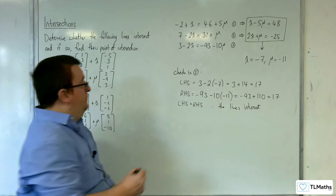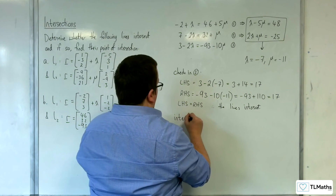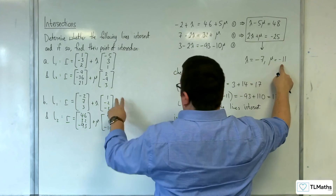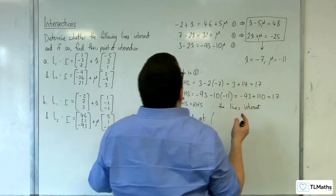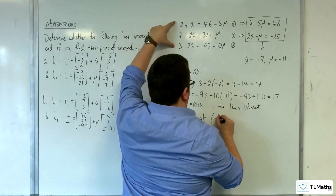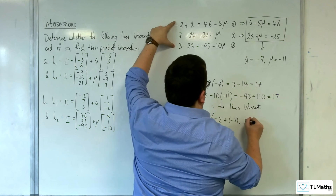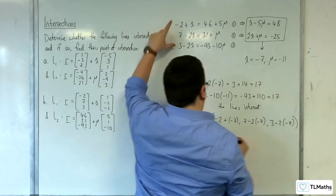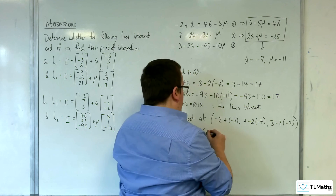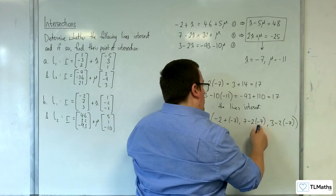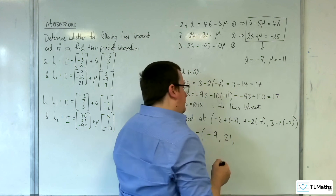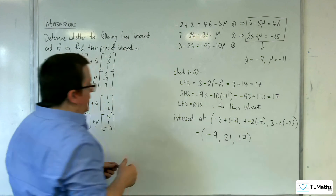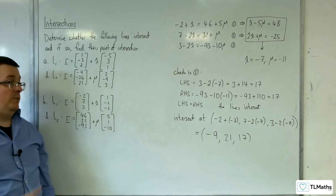So now we just need to find the point of intersection. We're going to substitute λ equals minus 7: minus 2 plus minus 7, 7 take away 2 lots of minus 7, and 3 take away 2 lots of minus 7. So minus 2 take away 7 is minus 9, 7 plus 14 is 21, and 3 plus 14 is 17. So minus 9, 21, 17 is the point of intersection.